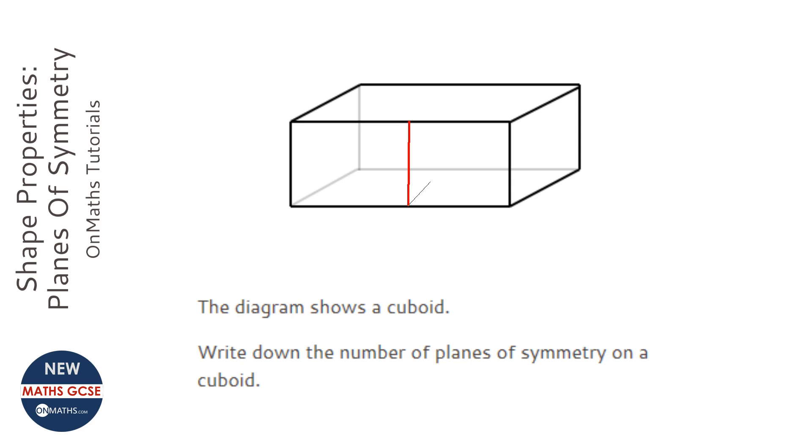If I just drew it on—I'm rubbish at getting the perspective right—but it would be this one here. If you cut it down there, it would be the same left and right. And it's a cuboid, so we can't guarantee the lengths are the same, so it will be a line along there.